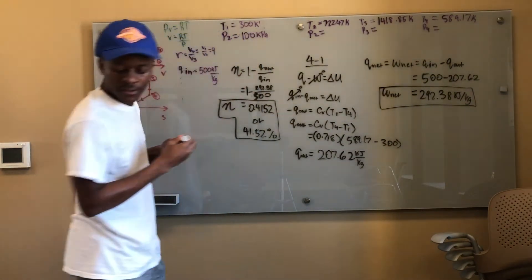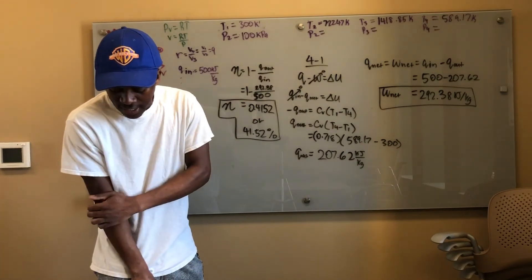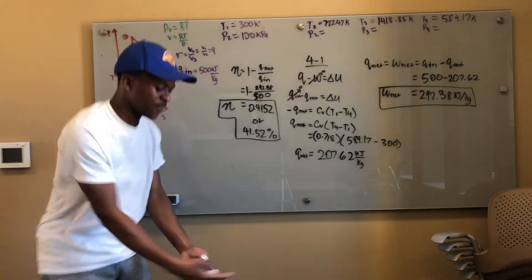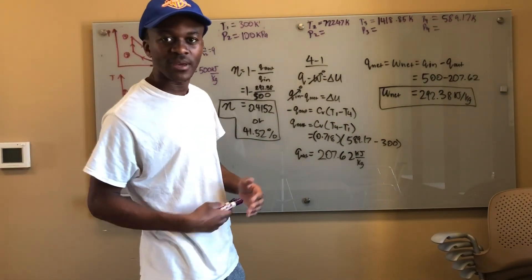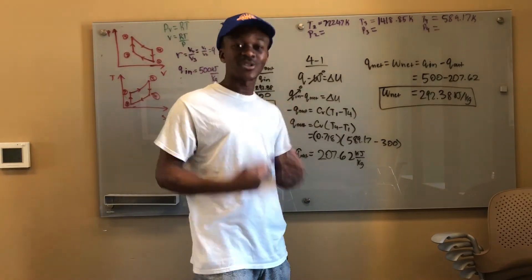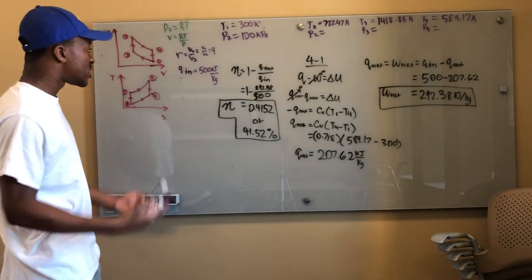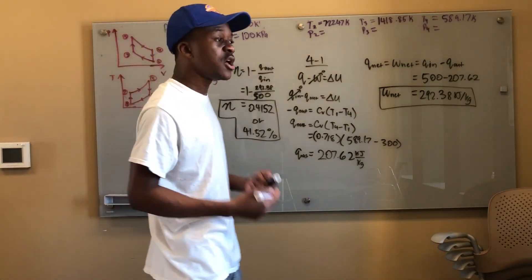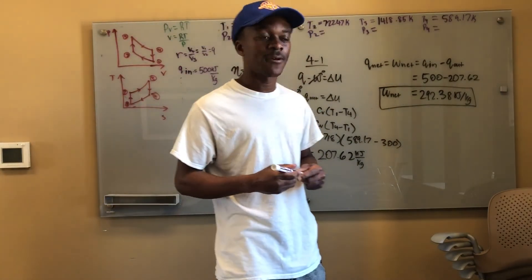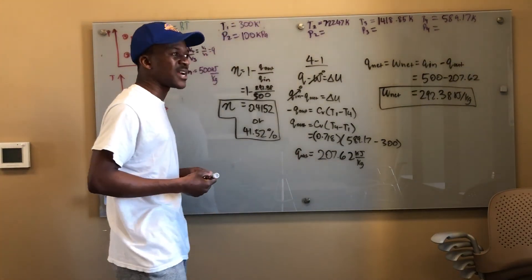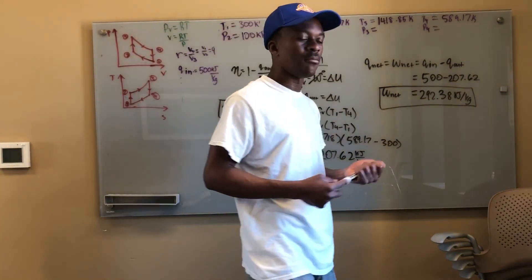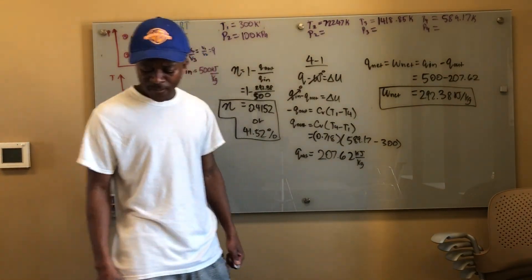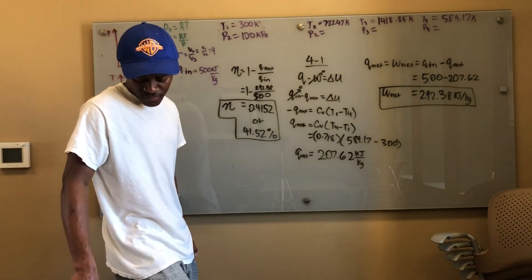Okay now they asked how much entropy is produced during the compression process and expansion process. I don't even need to write anything for that. Isentropic means no change in entropy. So there is no entropy produced for the expansion process nor the compression process because those are isentropic processes. Anytime you hear isentropic just know that delta S equals zero. We know that. That was just sort of a freebie that they were throwing us.